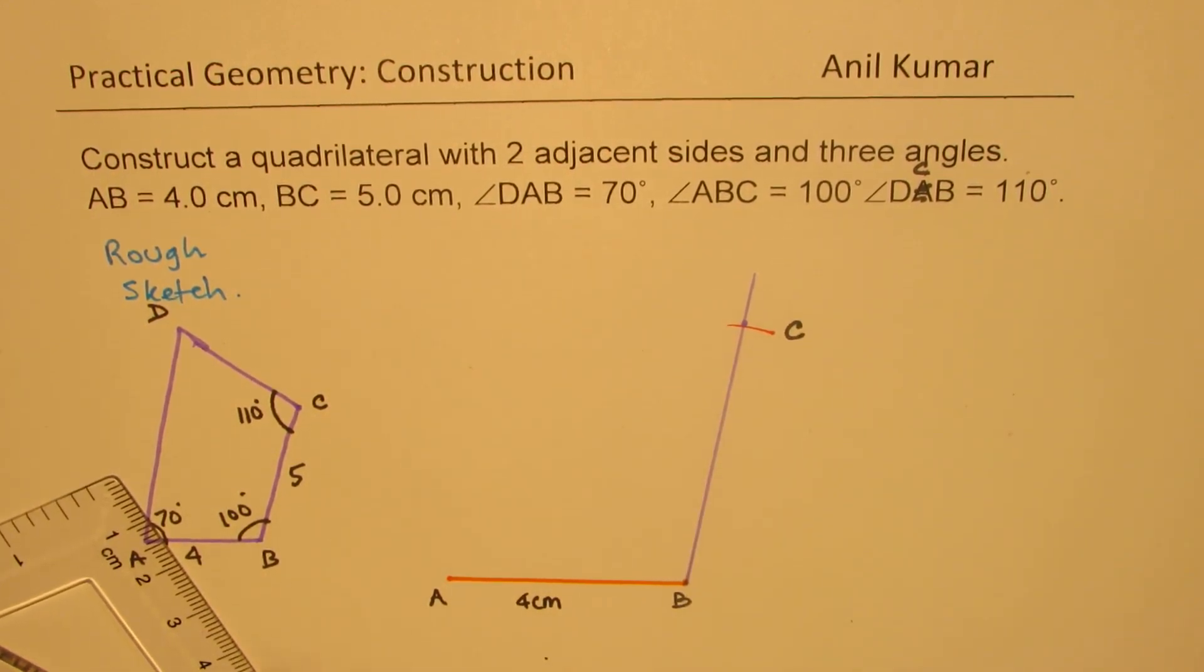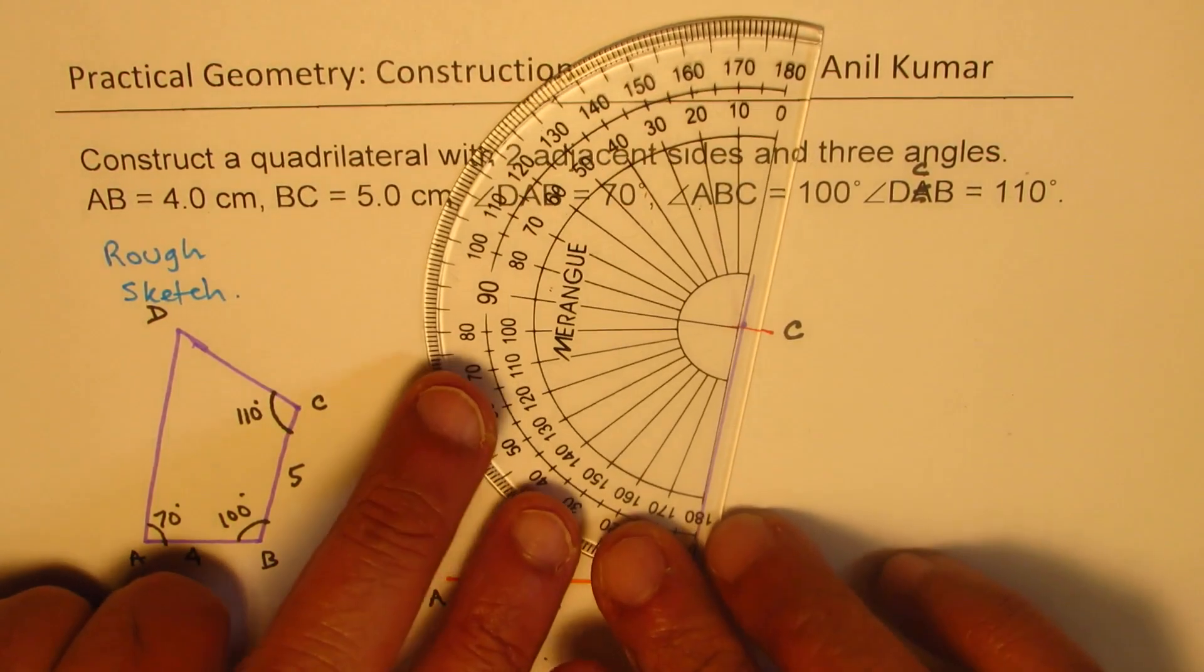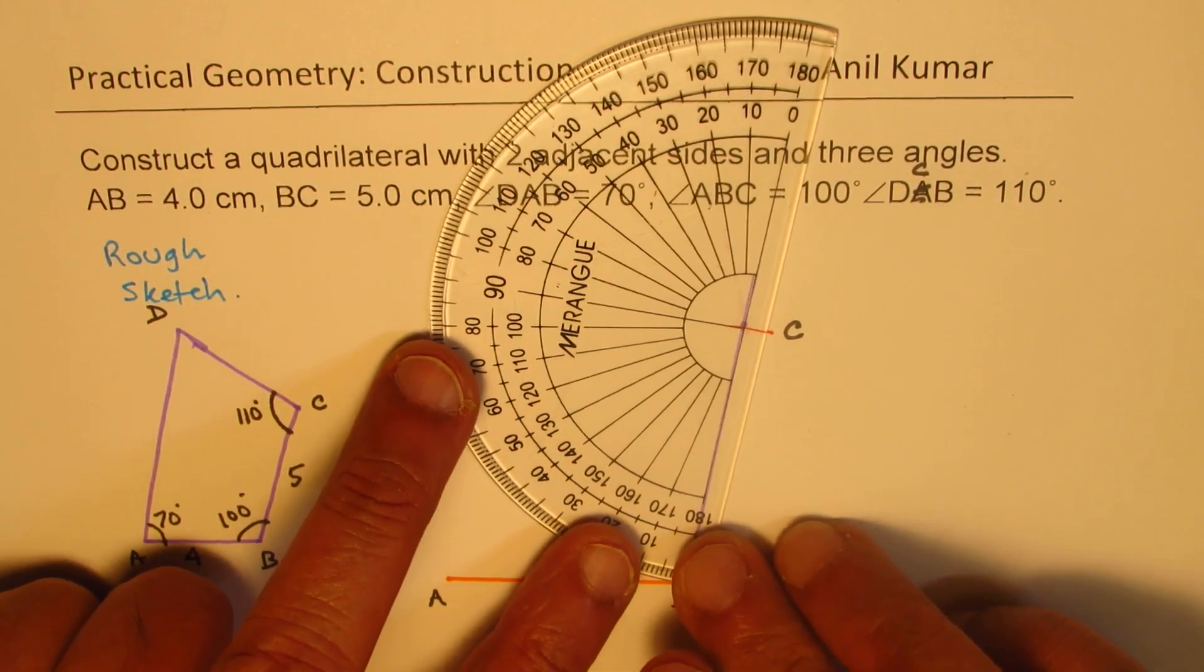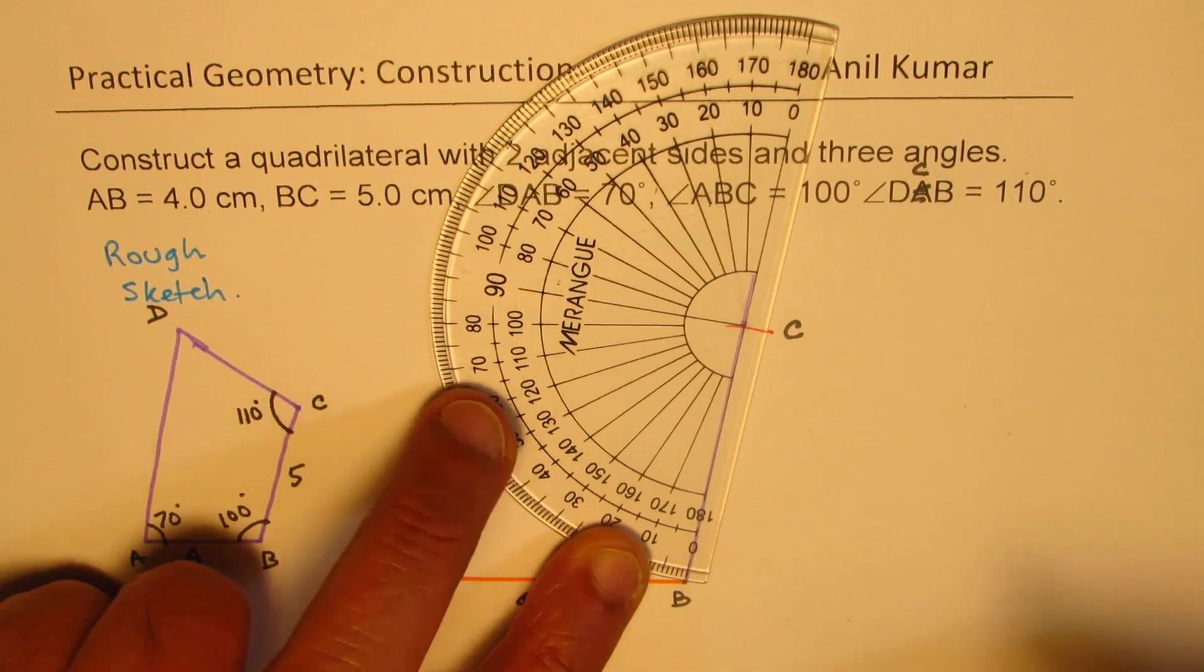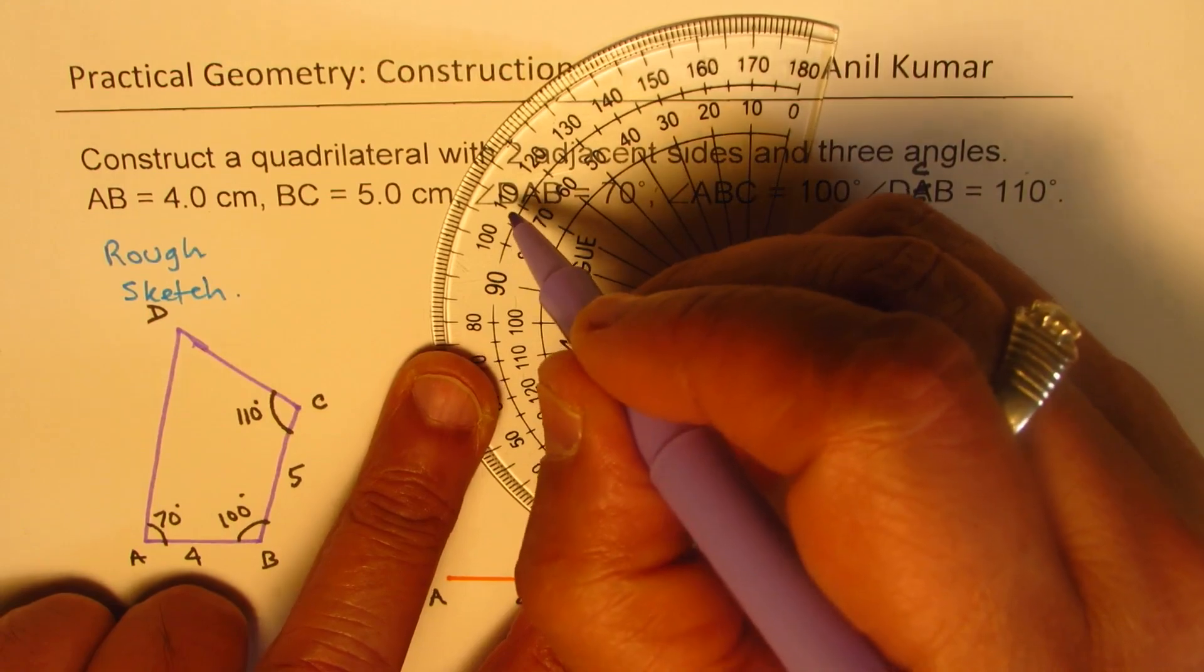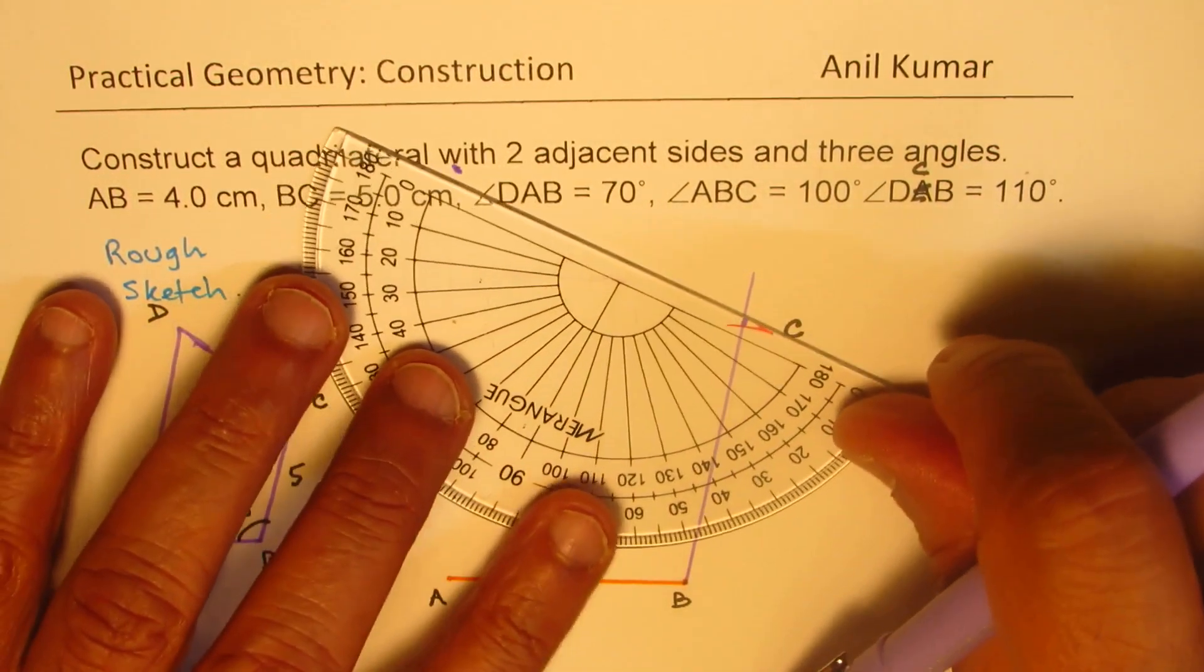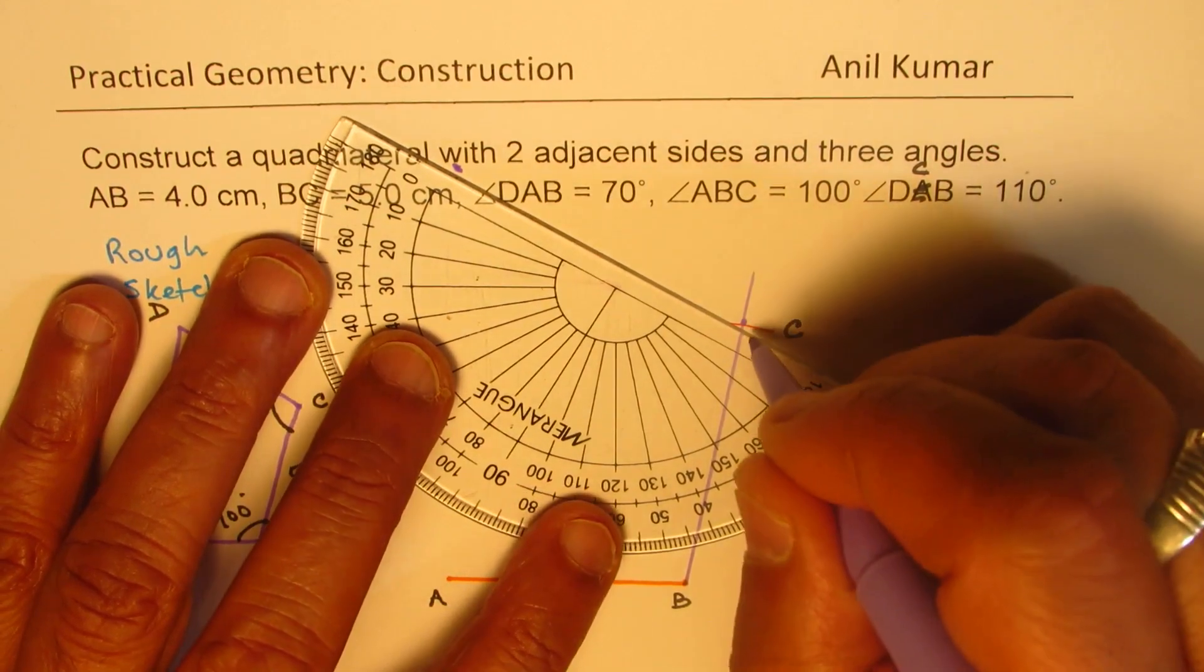Now at C, we can draw an angle of 110 degrees. So we'll again use a protractor to draw the angle of 110 degrees. So there you go, 110, 0, 90, 100, and 110. So we can join this and extend.